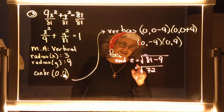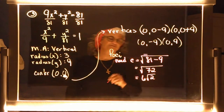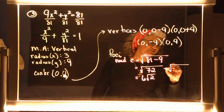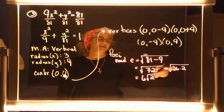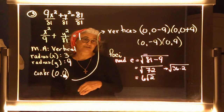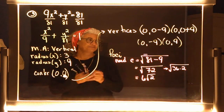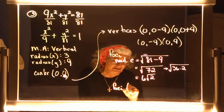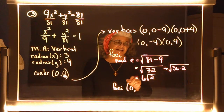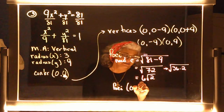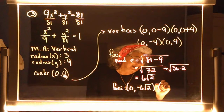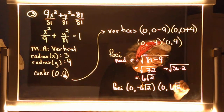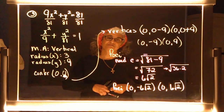Vertices: y is changing, so the vertices are (0, −9) and (0, 9). For foci: c = √(81−9) = √72 = 6√2, since √72 = √36·√2 = 6√2. So the foci are at (0, −6√2) and (0, 6√2).